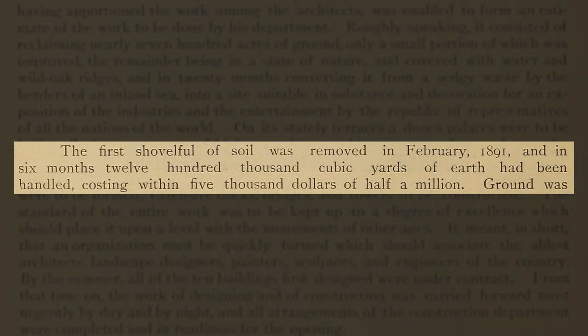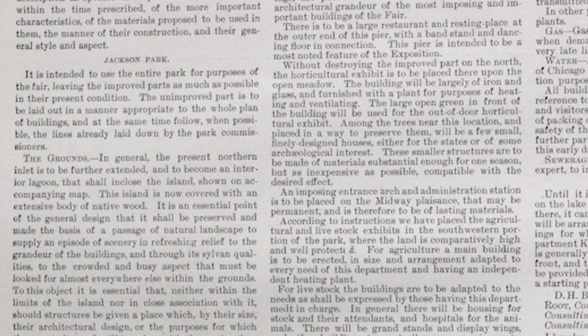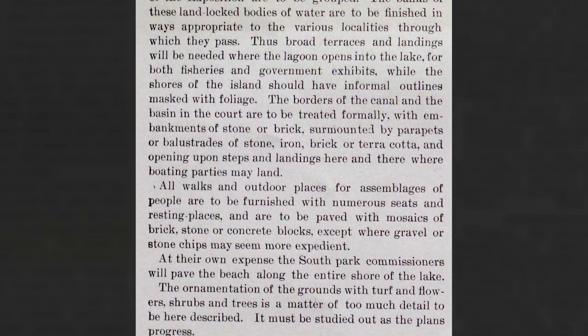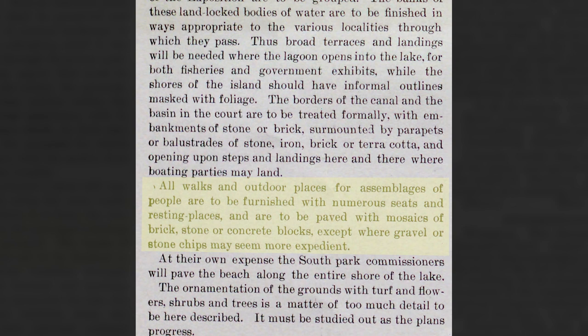Recall that in our last video, the moving of Earth began in February of the following year, 1891 — three months later. The following section, labeled The Grounds, discusses the shaping, building, and beautification of various water areas within this event. Take note of the materials being mentioned. It reads: 'The borders of the canal and basin in the court are to be treated formally with embankments of stone or brick, surmounted by parapets or balustrades of stone, iron, brick, or terracotta, and opening upon steps and landings here and there where boating parties may land.'